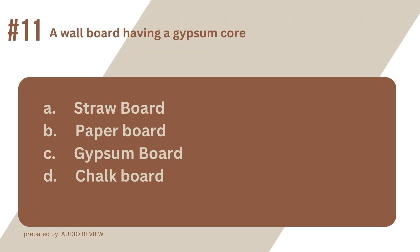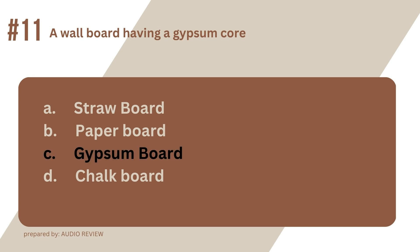Question 11. A wall board having a gypsum core. A. Straw board. B. Paper board. C. Gypsum board. D. Chalk board. The answer? It's C. Gypsum board. A wall board having a gypsum core. Gypsum board.